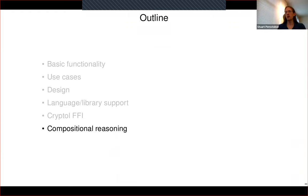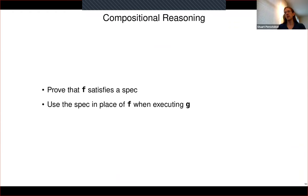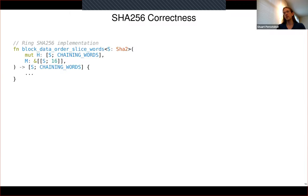Now I'll get into compositional reasoning. The main idea: we have some function F, we prove it satisfies a spec, and then when reasoning about G — another function that calls F — we use the spec instead of the actual body of F. The purpose is that if you write the spec properly, you can end up with your proof of G being more efficient; the queries sent to the solver are easier for the solver to handle.